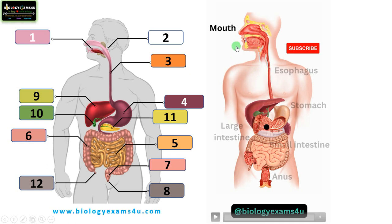The digestive system is made up of two components. The first one is the alimentary canal starting from mouth to anus through which the food moves. It includes mouth, esophagus, stomach, small intestine, large intestine, anus, rectum, etc. The second component are the accessory organs like liver, gallbladder, salivary glands, etc.